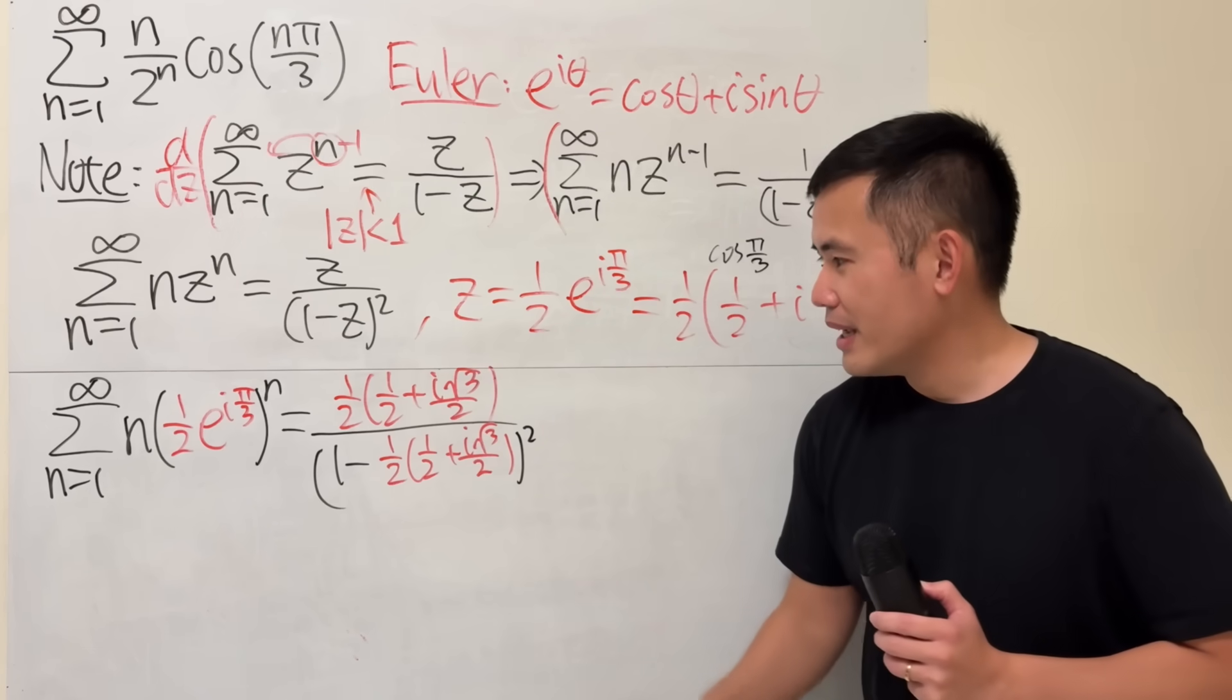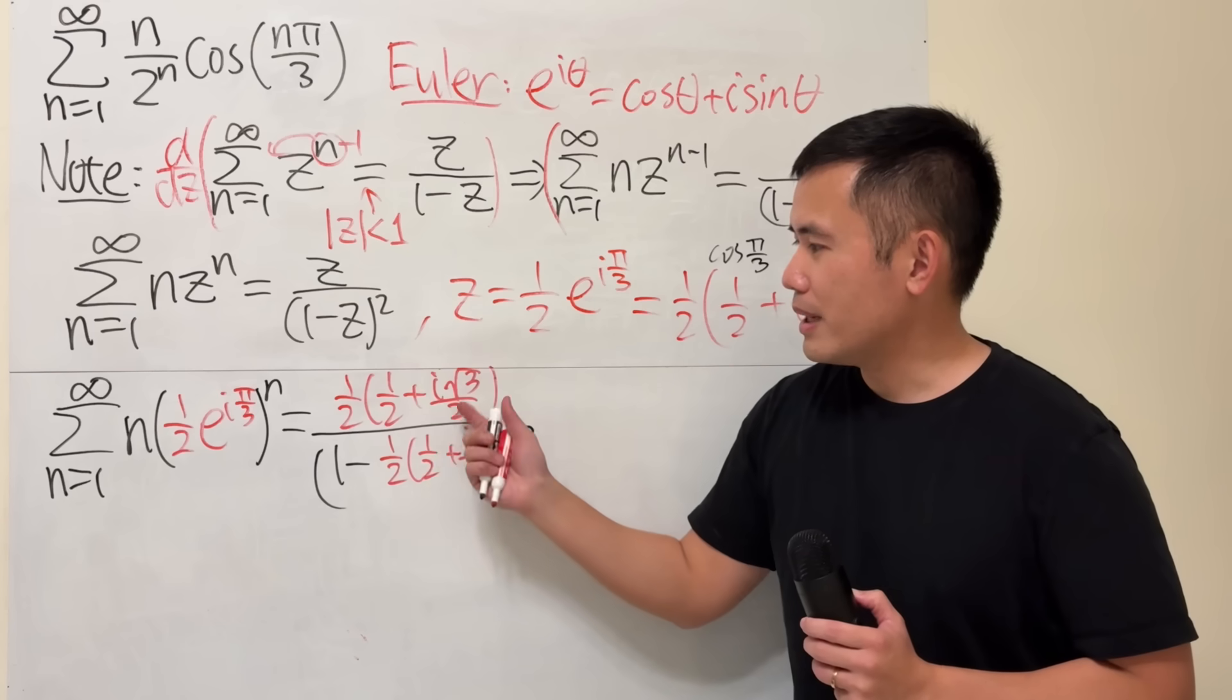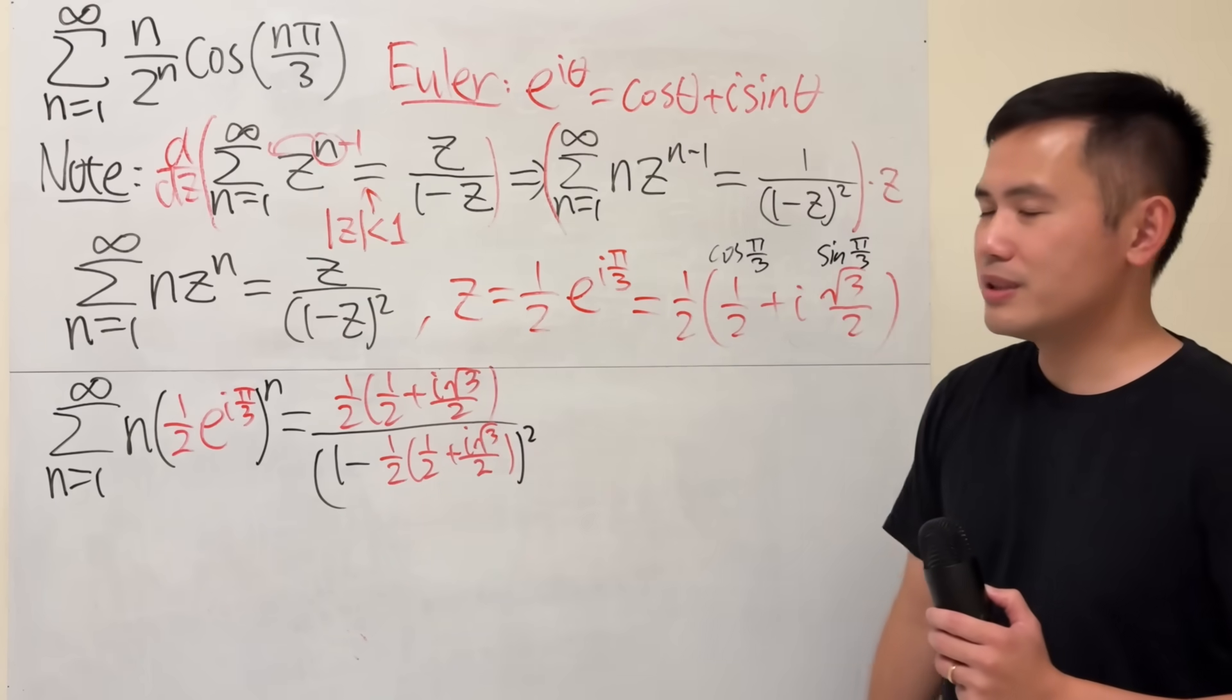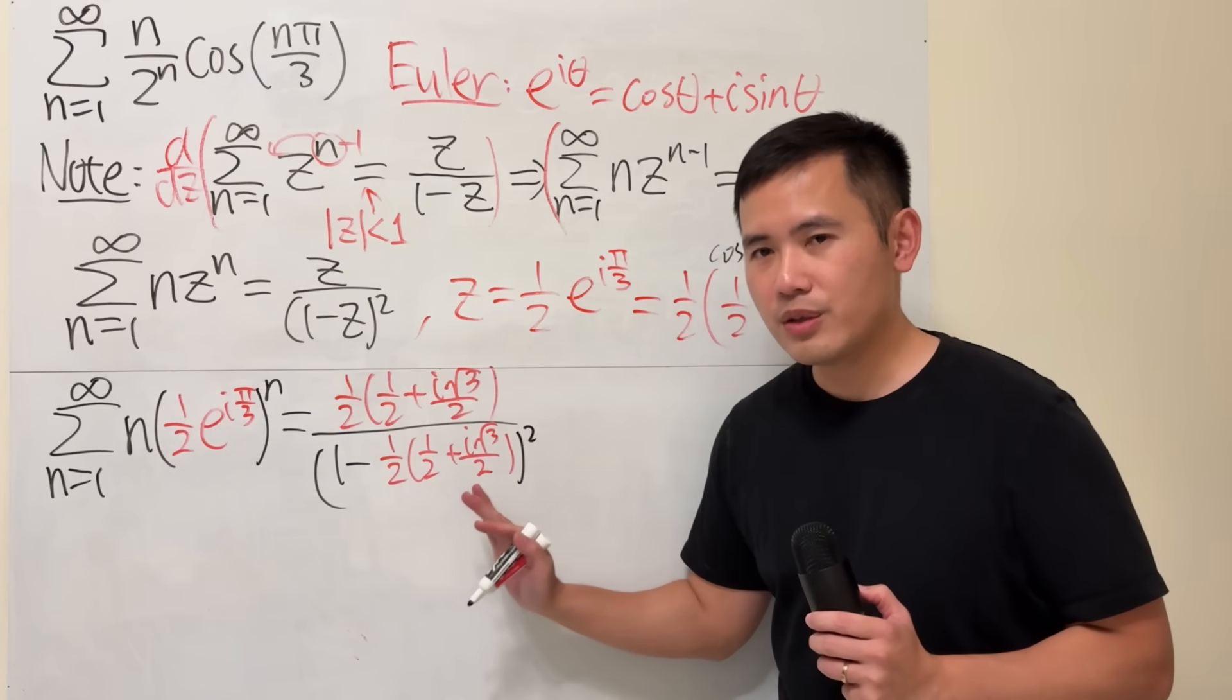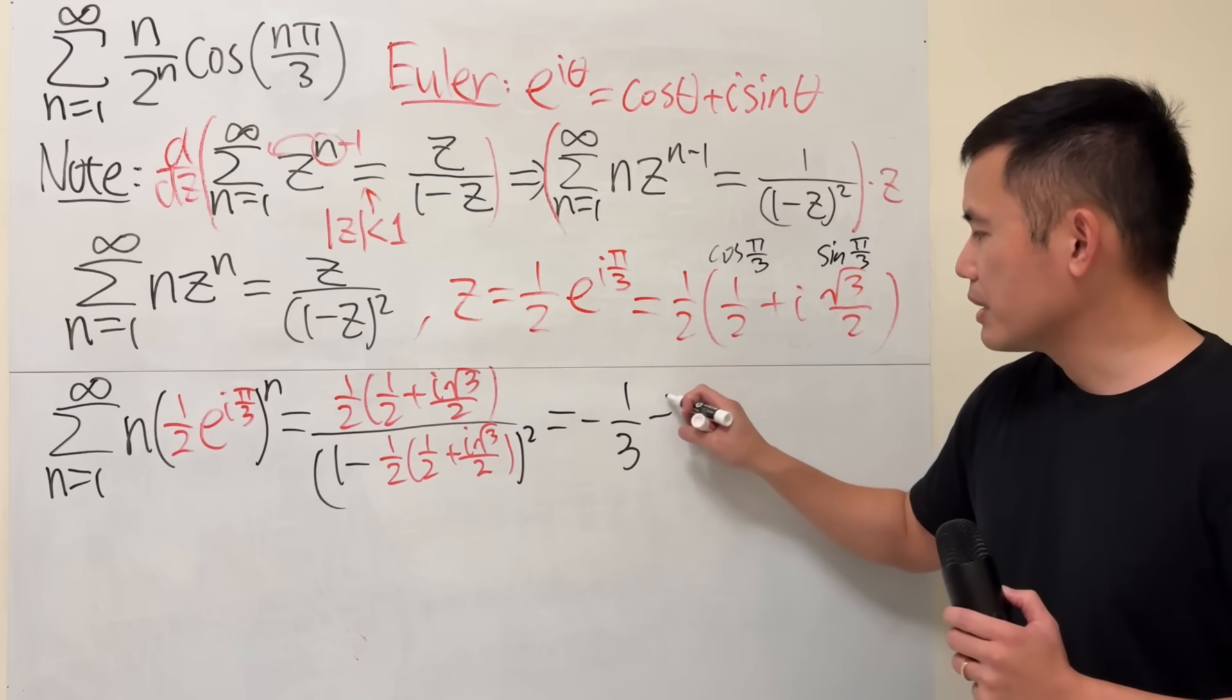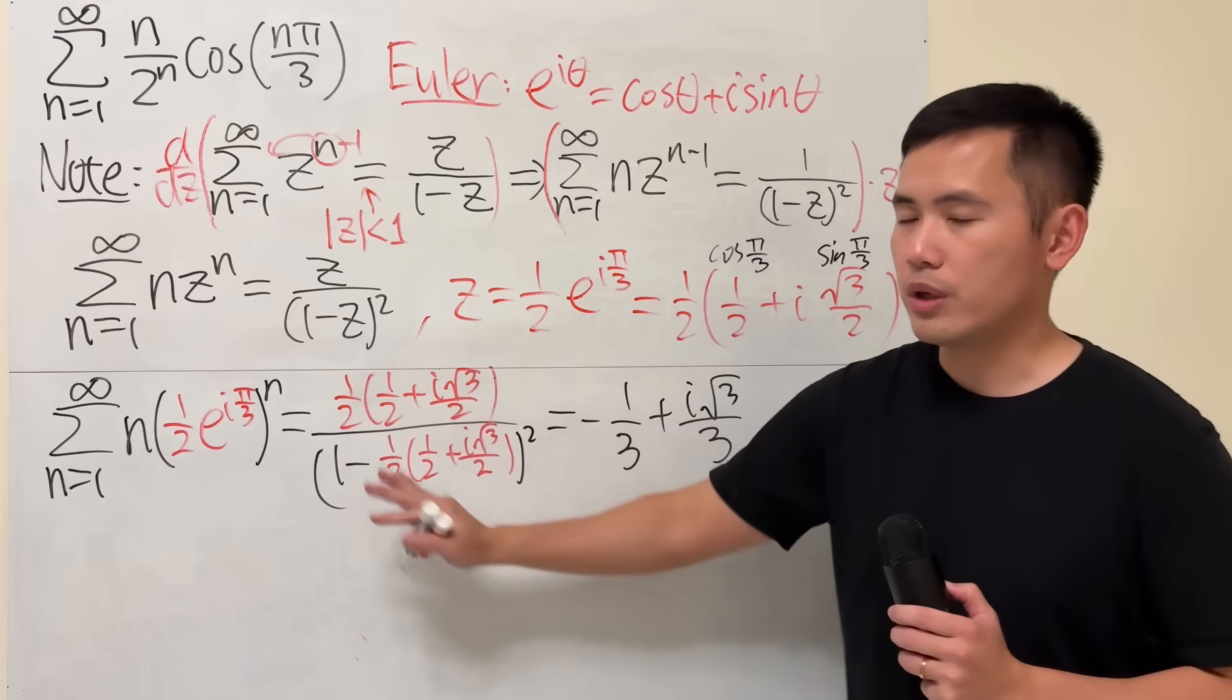Here's the deal. This right here is just going to be some algebra. Multiply the 1 half, simplify this, expand the square, and then multiply the top and bottom by the conjugate, and put that into its standard form. I will have a separate video for you guys. Right here I will just tell you the answer for that. We will end up with negative 1 third plus i square root of 3 over 3.